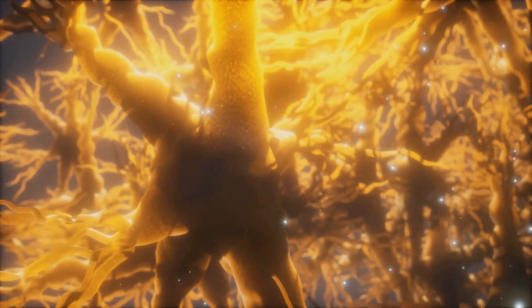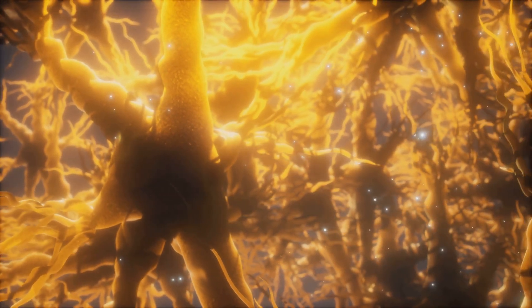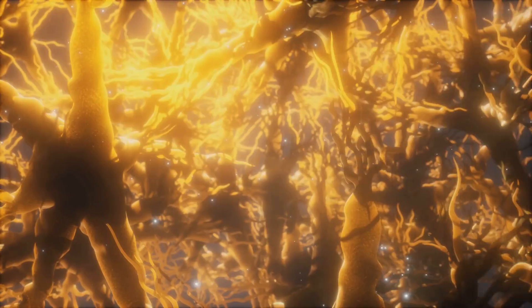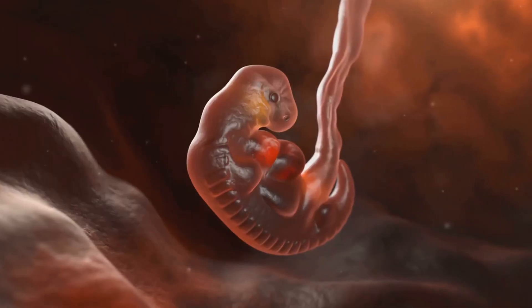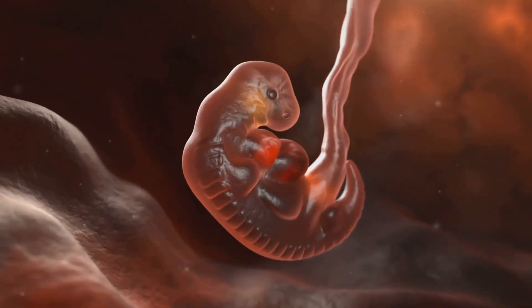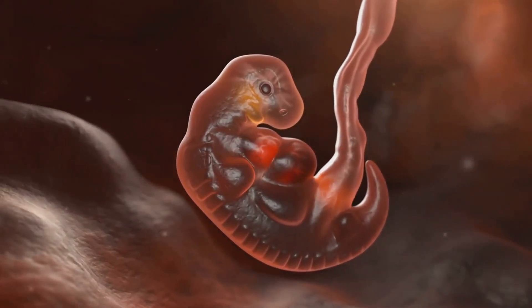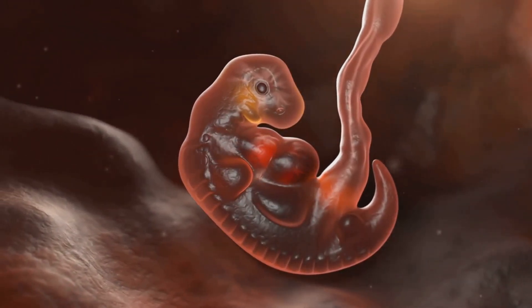And while the heart is busy finding its beat, the nervous system is also hard at work, developing at an astonishing rate. And by week four, we start to see the first signs of limbs, tiny buds that will eventually become arms and legs.